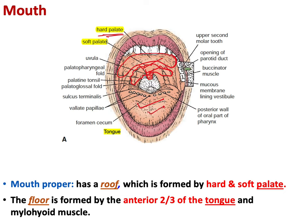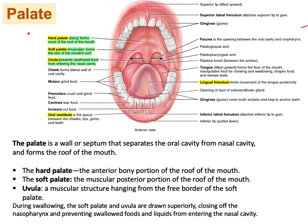The floor of the oral cavity is mainly represented by the anterior two-thirds of the tongue, plus the mylohyoid muscle. So the oral cavity proper has a roof formed by the hard and soft palate and a floor formed by the tongue.